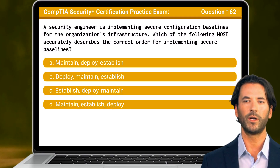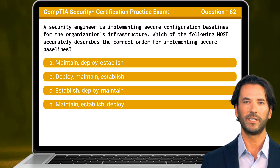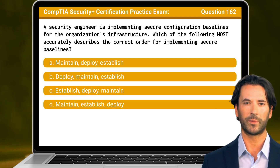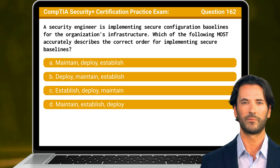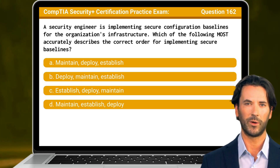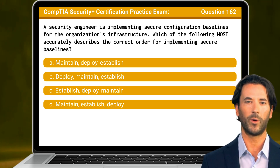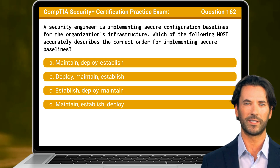Question 162. A security engineer is implementing secure configuration baselines for the organization's infrastructure. Which of the following most accurately describes the correct order for implementing secure baselines?